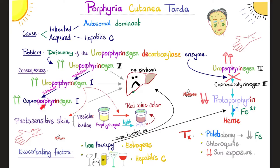Look at this — porphyrin, porphyrin, porphyrin. Accumulation of these porphyrins in the bloodstream will eventually reach the skin, because the skin also has blood vessels. In the skin, these porphyrins absorb ultraviolet light, and this UV light will change them and make your skin photosensitive — causing vesicles and blisters any time you get exposed to sunlight. Moreover, uroporphyrin III, after getting exposed to light, will change into porphyrin — a protein that is purple — giving your urine a characteristic purple or red wine color.